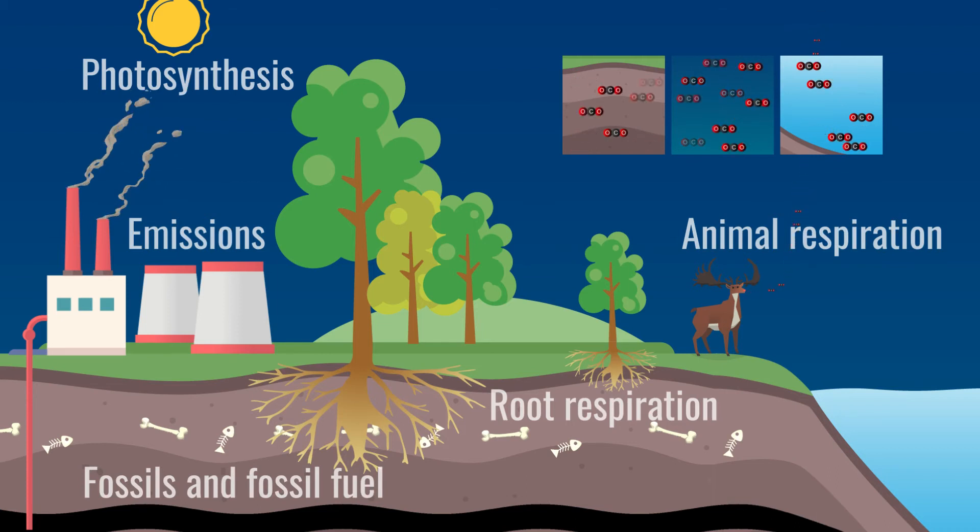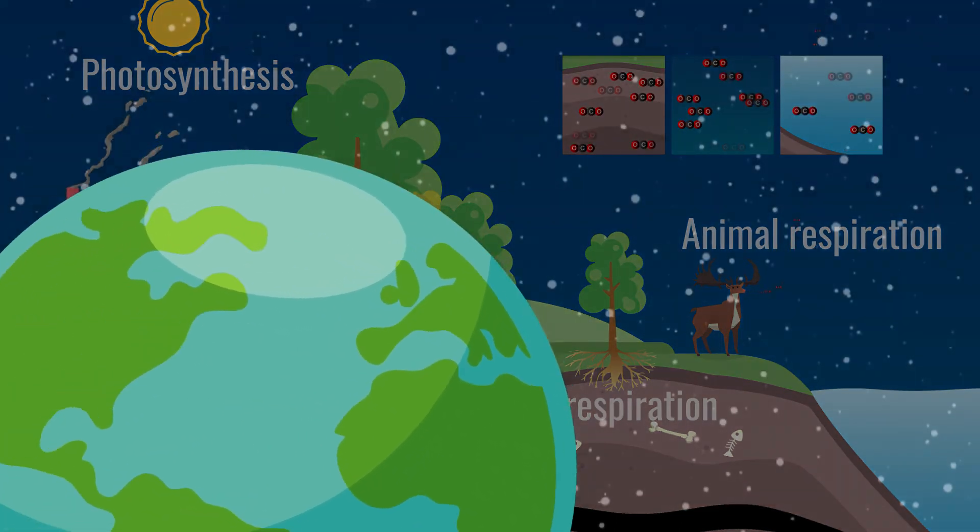This human activity is negatively affecting the natural carbon cycle. Human input is causing a net increase in the atmosphere, soil and oceans. Carbon dioxide is a greenhouse gas.